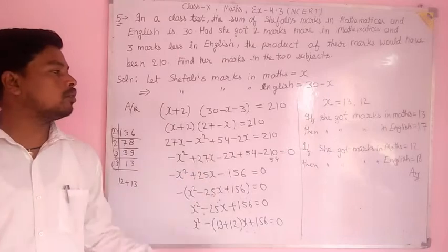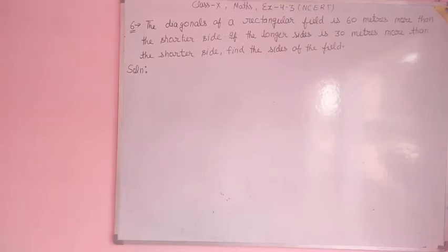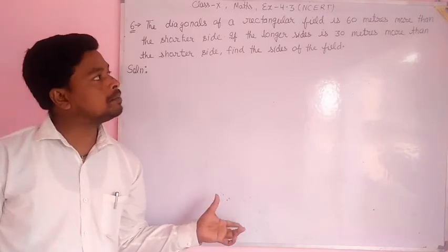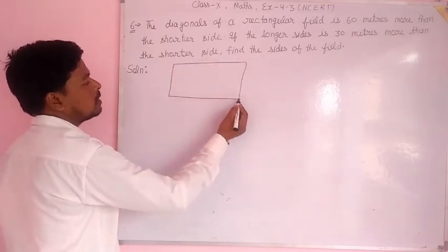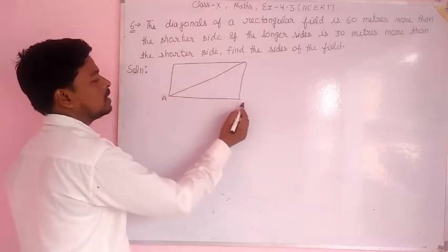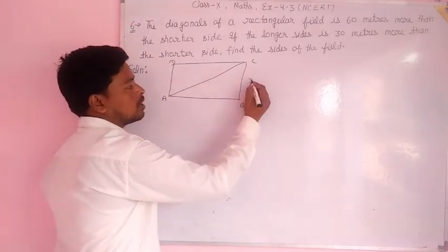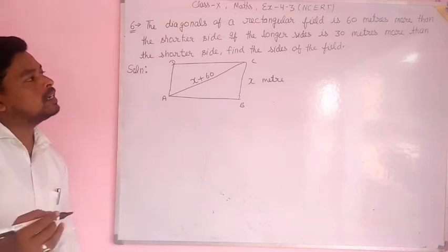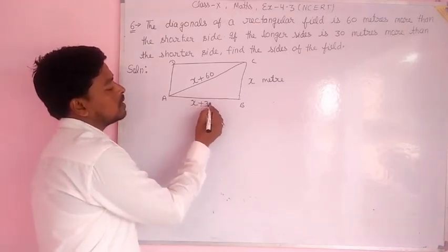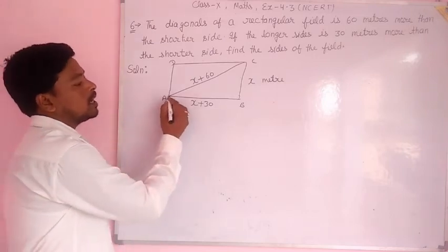Question number 6: The diagonal of a rectangular field is 60 meters more than the shorter side. This is rectangle ABCD, and the diagonal AC is 60 meters more than the shorter side. If the longer side is 30 meters more than the shorter side, find the sides of the field.